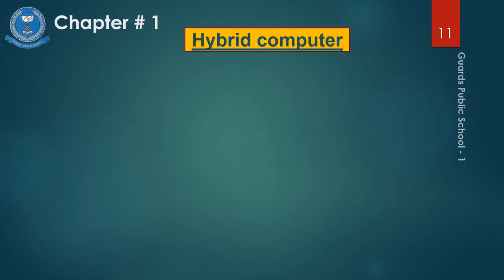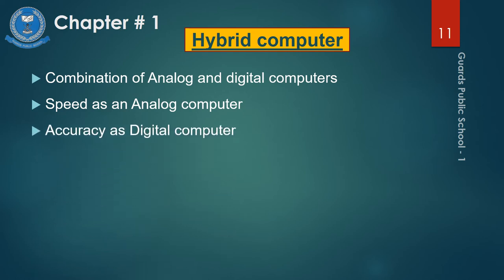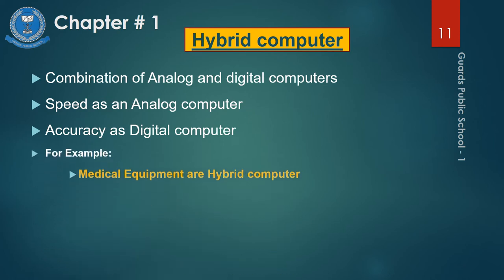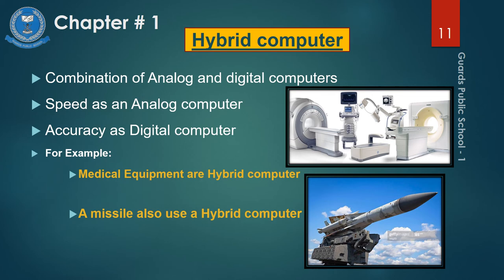Hybrid computer is a combination of analog and digital computer. It has the speed of an analog computer and the accuracy of a digital computer. It is mainly used in the medical field. For example, computers used in hospitals to measure the heartbeat of a patient, devices used in petrol pumps, scientific applications, and controlling industrial processes. A very good example of a hybrid computer is a car that runs on gas and electricity.